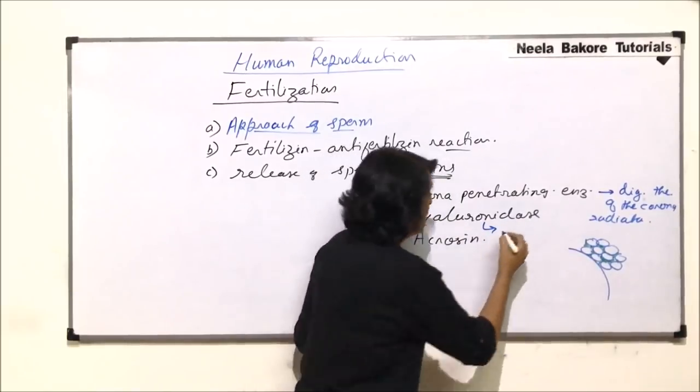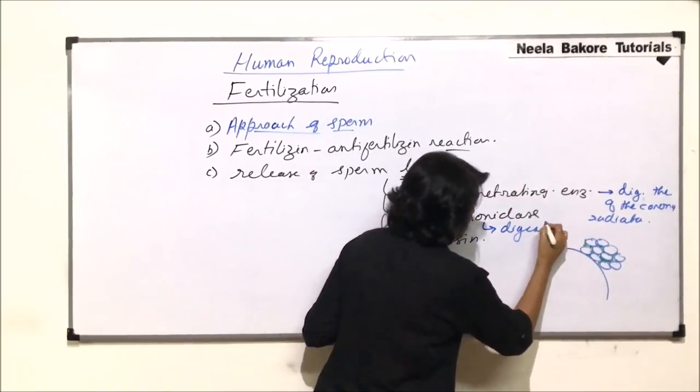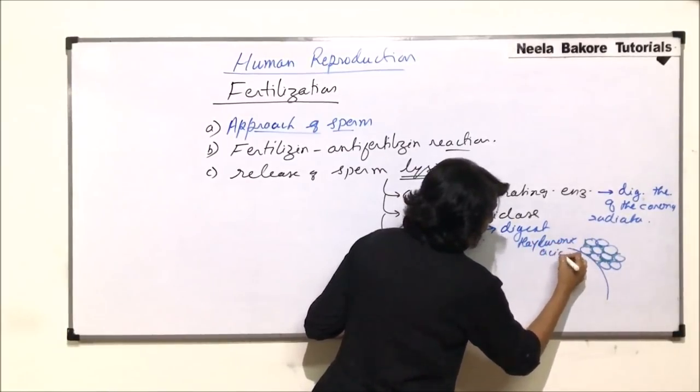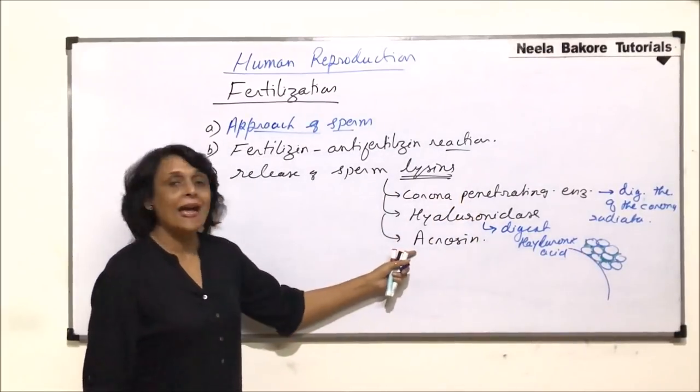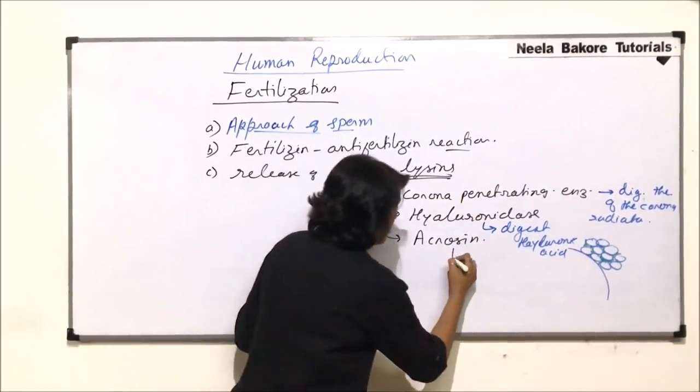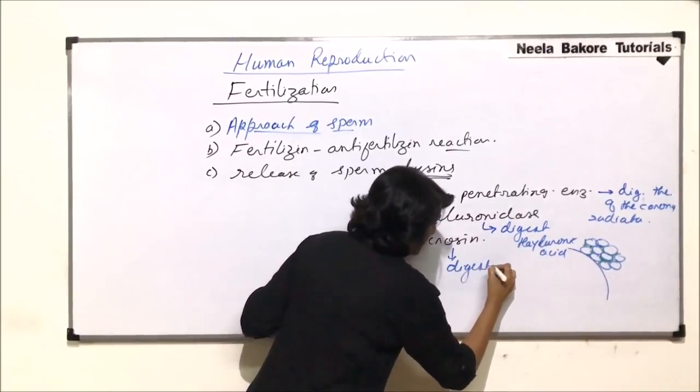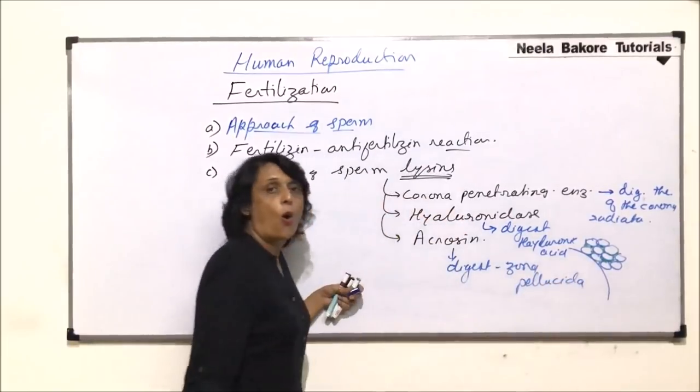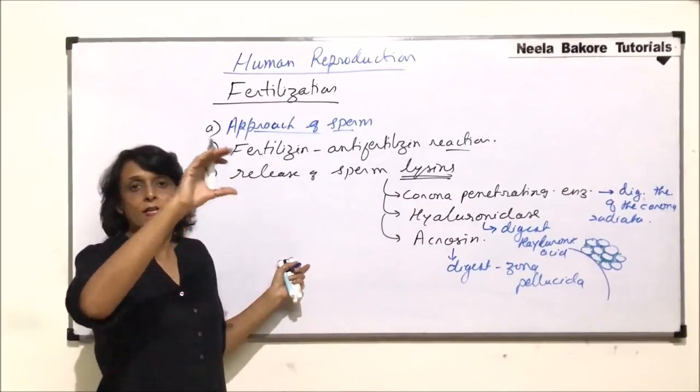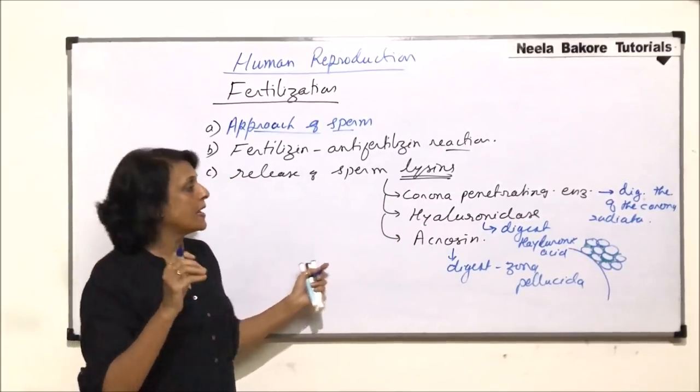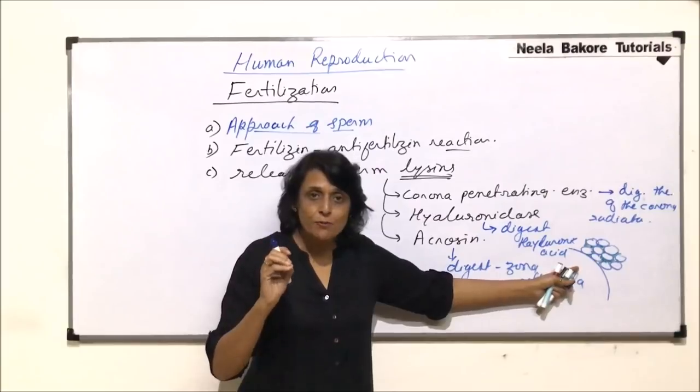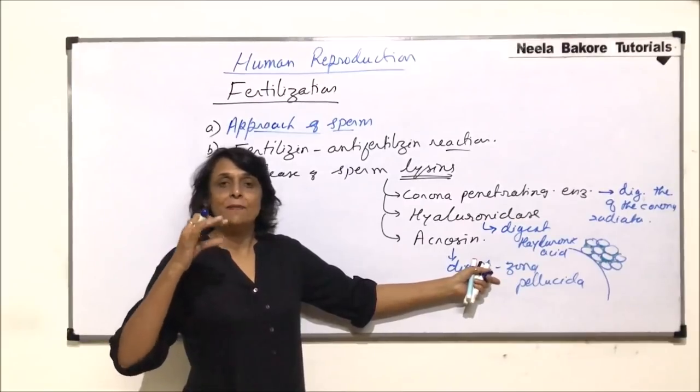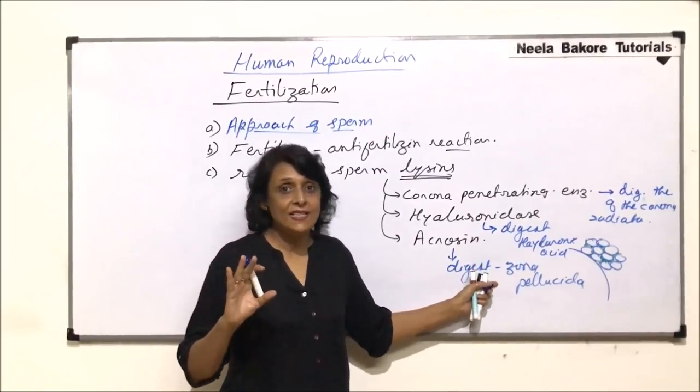Hyaluronidase enzyme would digest hyaluronic acid which is actually acting as a glue. So acrosin is going to digest the zona pellucida. That means all the three layers which are there. There is a corona-radiator layer. The cells which are there, they are held together by the substance that is also digested and zona pellucida. So outside vitelline membrane, the two layers which are there, they are digested.